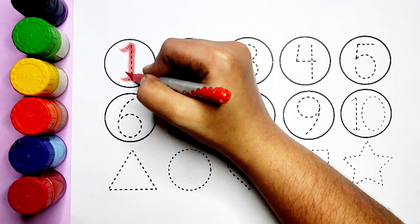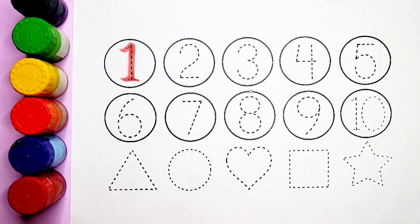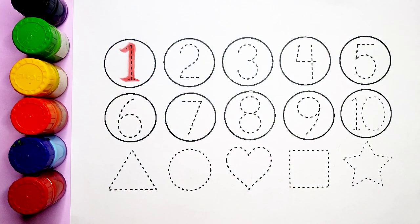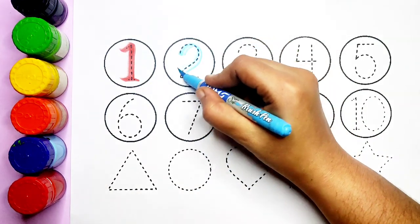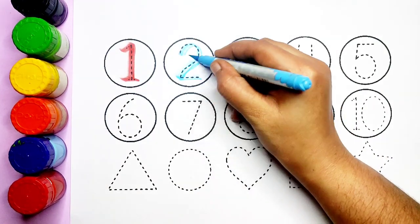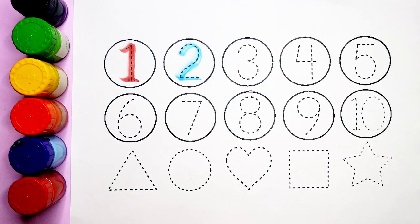Number one. What is this children? One. After one comes two. Sky blue color, number two.